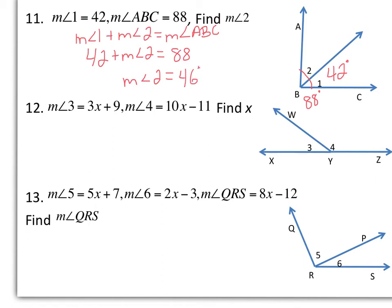Okay number 12. We know that the measure of angle 3 is 3X plus 9, so that's right here. And we know that the measure of angle 4 is 10X minus 11. And we want to find X. Well again, by our angle addition postulate, we can tell that angle XYZ is a straight angle, so it's 180 degrees. So my equation would be 3X plus 9 plus 10X minus 11 equals 180.